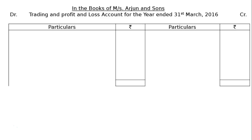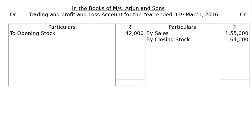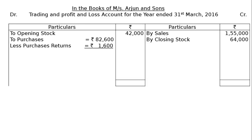Draw the trading account starting from the credit side: by sales rupees 1 lakh 55,000; by closing stock rupees 64,000. On the debit side: to opening stock rupees 42,000; to purchases rupees 82,600 less purchases return rupees 1,600, giving net purchases rupees 81,000 in the final column.